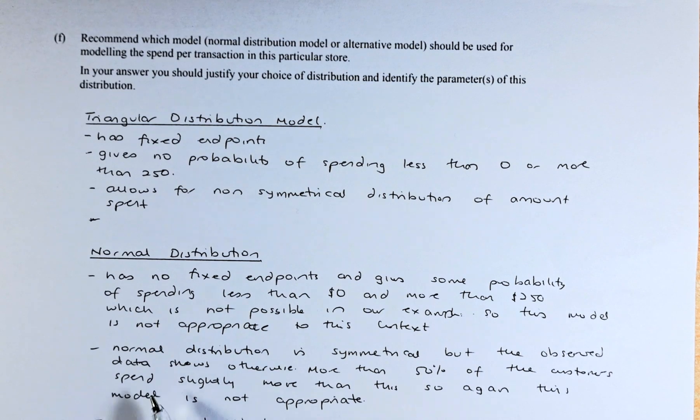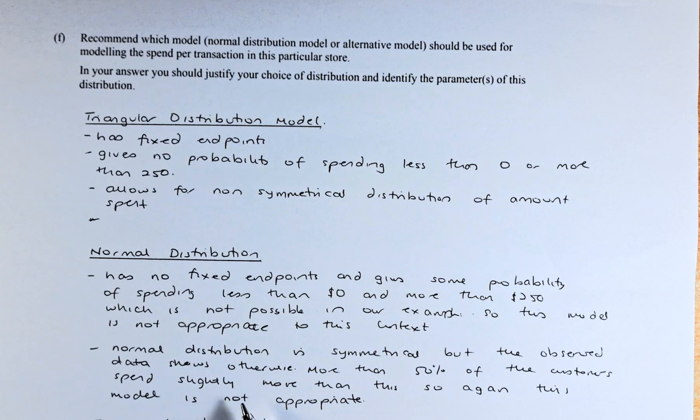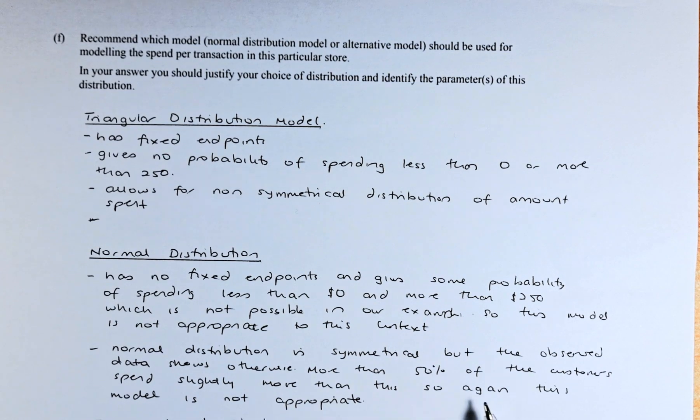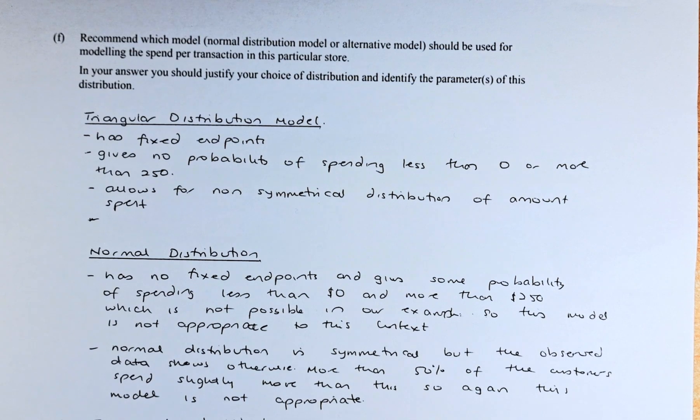Next, the normal distribution is symmetrical, which I spoke earlier, but the observed data, the one I showed before, shows otherwise. More than 50% of the customer spent slightly more than this. So this model is again not appropriate. So there's two points that shows that triangular distribution is more appropriate.